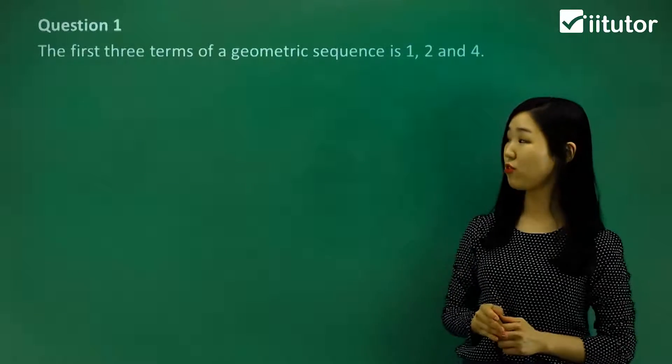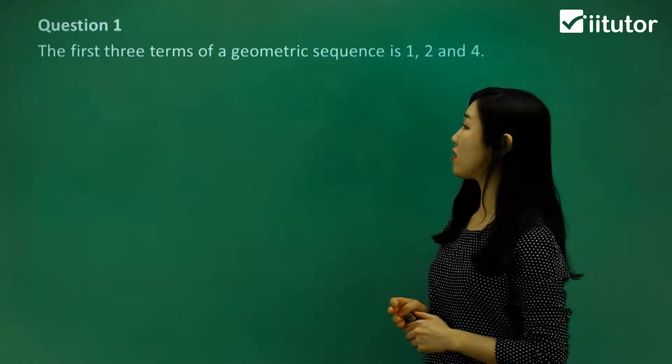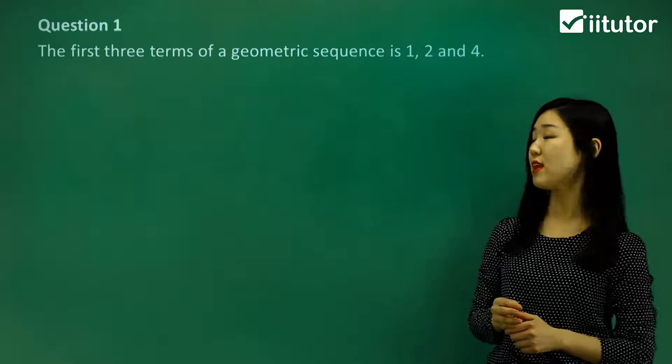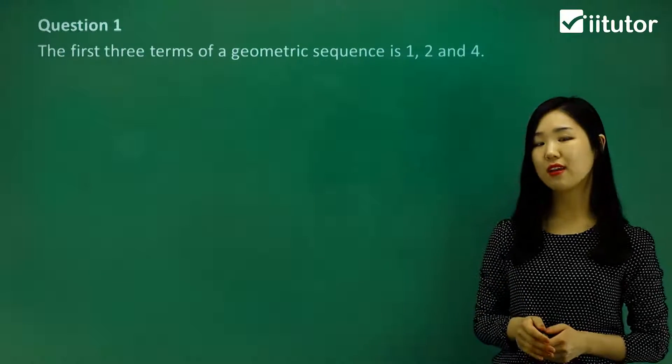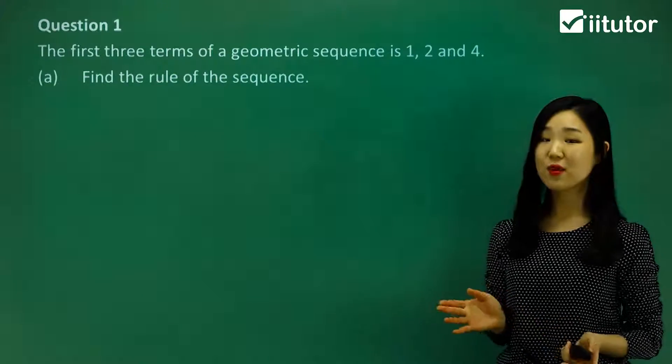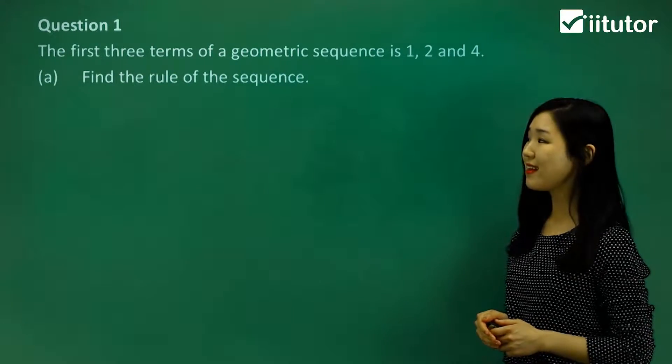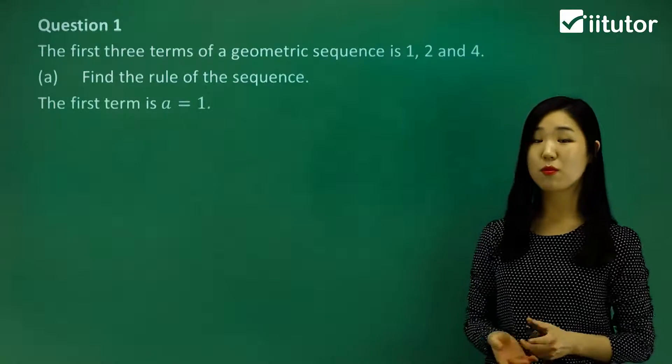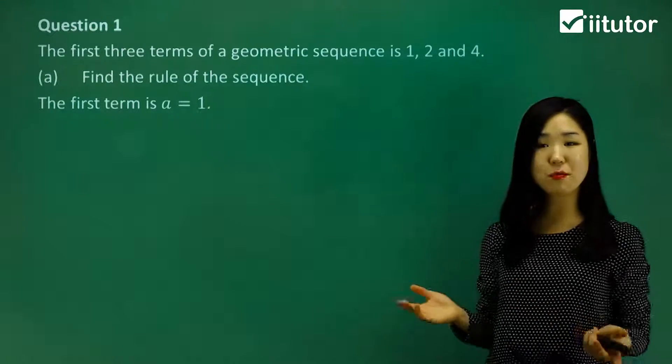Now you can have a look at question 1. It says the first three terms of a geometric sequence is 1, 2 and 4. And what we're going to do to start off with is find the rule of the sequence. Now, you can clearly see that the first term is 1. The first one in the sequence, that must be the first term.